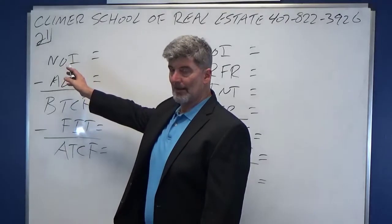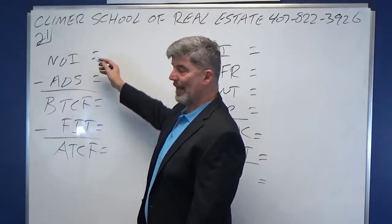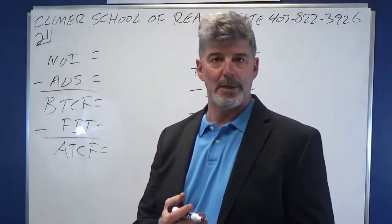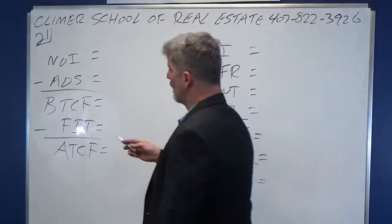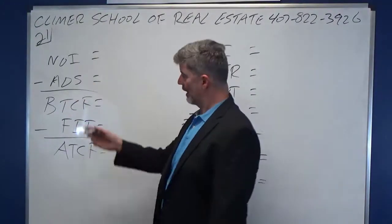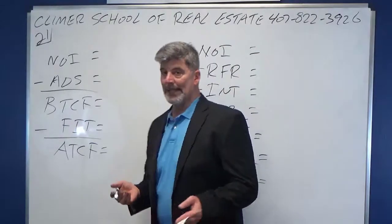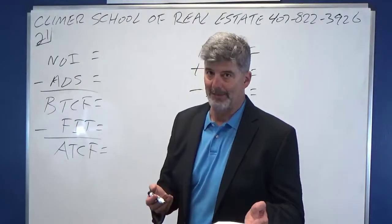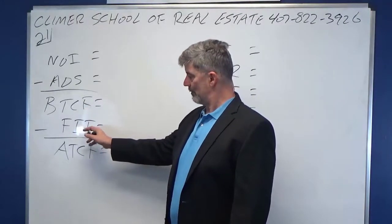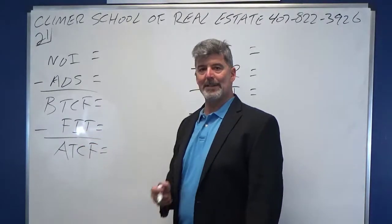NOI — everything kind of starts with NOI — minus annual debt service. Remember what NOI is: how much money is the building making you after you pay to run it. It's kind of the only number people care about. Minus the debt service, which is your annual mortgage payment, gives you before-tax cash flow. If you've got to pay the bank, you don't have it in your pocket. From before-tax cash flow, subtract federal income tax, which you're paying Uncle Sam — that gives you after-tax cash flow.